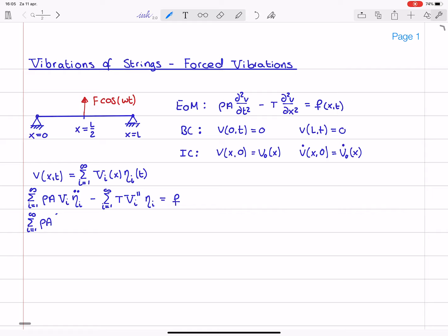So, this becomes the infinite sum of rho a, and then the integral of vj times vi dx times eta i double dot.